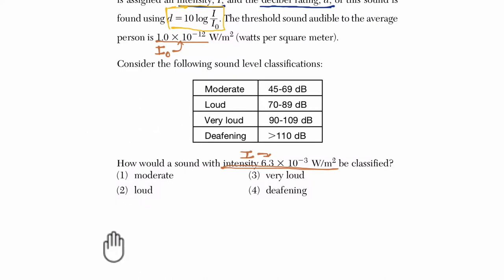We've got the formula that says, all right, well, d, our decibel rating, equals 10 times the log of 6.3 times 10 to the negative third, over 1 times 10 to the negative 12th. And this is something I would just enter on the calculator.